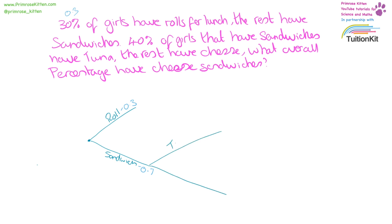So here we have tuna and cheese. 40% of the girls that have sandwiches have tuna, so that is 0.4. It has to add up to 1, making that 0.6. What I recommend you do whenever you're doing probability is get a highlighter and highlight the branch that we are looking at.